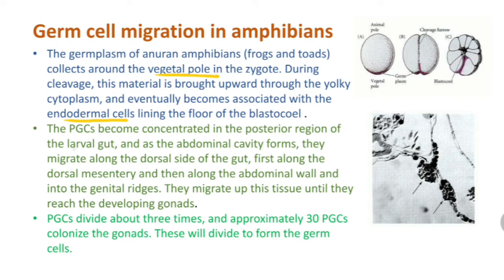The PGCs become concentrated in the posterior region of the larval gut. As the abdominal cavity forms, they migrate along the dorsal side of the gut, first along the dorsal mesentery and then along the abdominal wall.